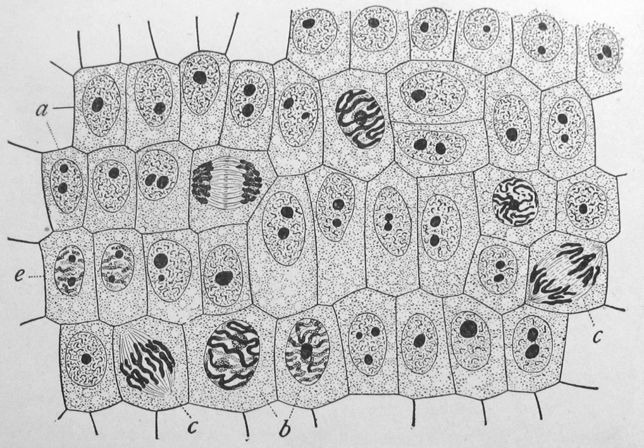Embedded within this membrane is a variety of protein molecules that act as channels and pumps that move different molecules into and out of the cell. The membrane is semi-permeable and selectively permeable, in that it can either let a substance, molecule, or ion pass through freely, pass through to a limited extent, or not pass through at all. Cell surface membranes also contain receptor proteins that allow cells to detect external signaling molecules such as hormones.